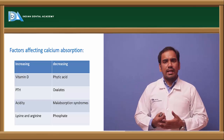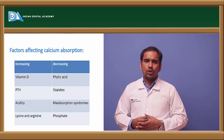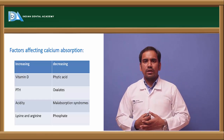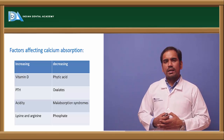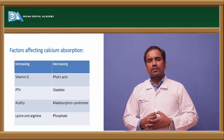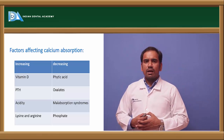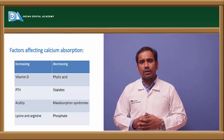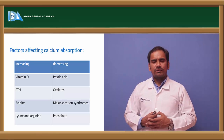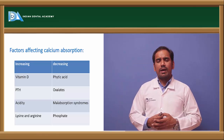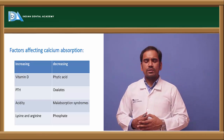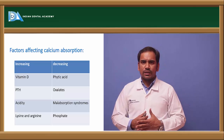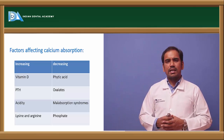Factors increasing calcium absorption include: Vitamin D (calcitriol), parathyroid hormone (PTH), acidity, and the amino acids lysine and arginine. Factors decreasing calcium absorption include: phytates (phytic acid), oxalates, malabsorption syndromes, and phosphate.